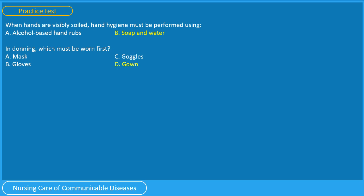The correct answer is D. Gown. Remember the man with his hands raised. In doffing, which must be removed last? A. Mask, B. Gloves, C. Goggles, D. Gown. You have 5 seconds.